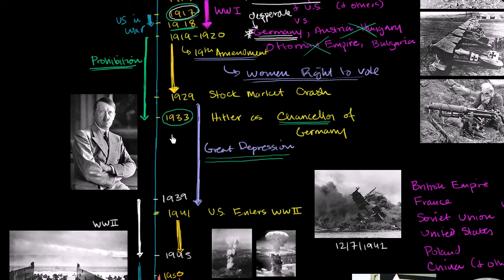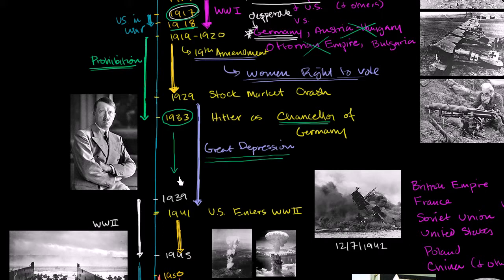Over the course of the rest of the 1930s, the Nazis consolidated power until we get to 1939. The rest of the world would kind of watch Hitler consolidating power. He came in democratically but was essentially turning it into a dictatorship and militarizing Germany. People started to get concerned, but they followed the doctrine of appeasement — just don't make him too angry, and maybe he won't start anything too bad.